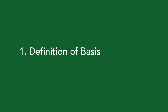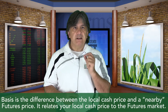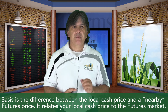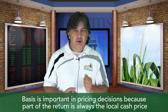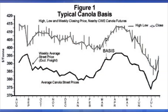Our first topic is defining basis. Basis is the difference between the local cash price and the nearby futures price — the current futures month. It relates your local cash price to the futures market. Basis is important in pricing decisions because part of the return is always the local cash price. Understanding the relationship between basis and your futures price is an important element of a risk management strategy. Remember, futures is your biggest risk — I've stressed that throughout this whole Market School video series. Not basis.